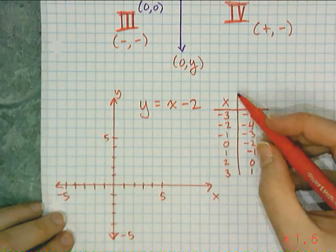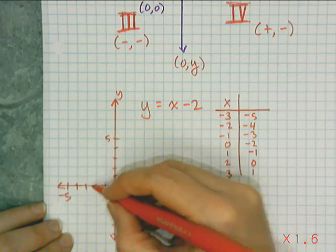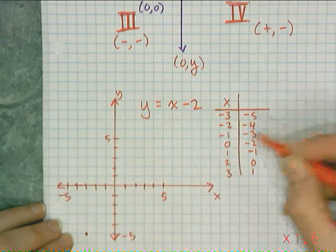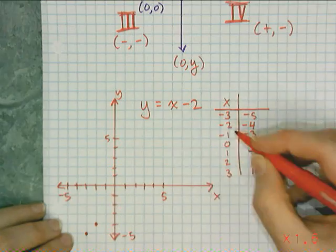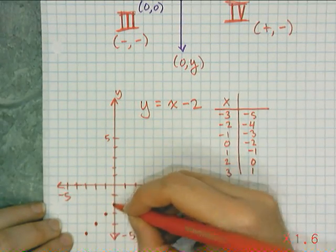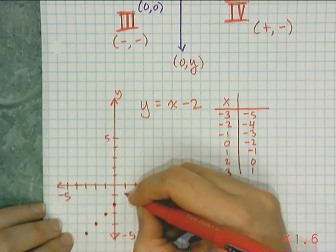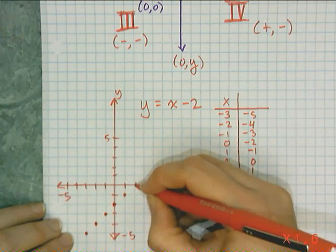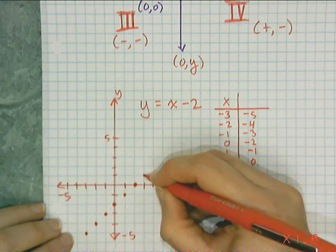So now I'm going to plot my points. So at negative 3, I have negative 5. So I have a dot there. And at negative 2, I have negative 4. And at negative 1, I have negative 3. At 0, I have negative 2. At 1, I have negative 1. At 2, I have 0. And at 3, I have 1.